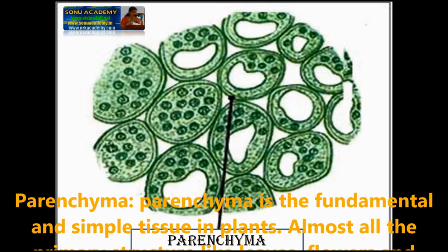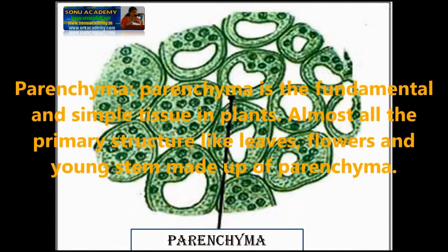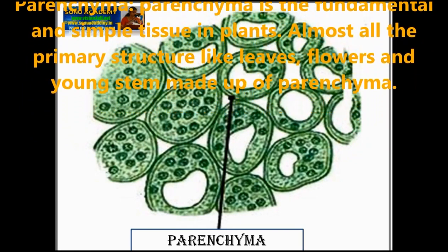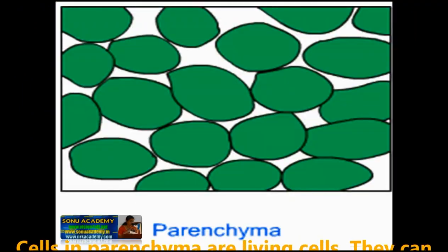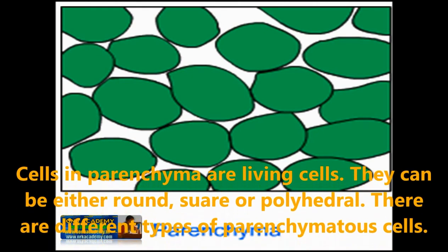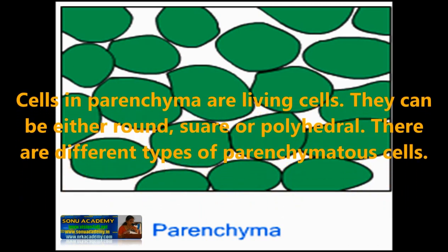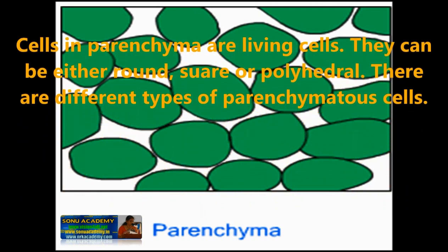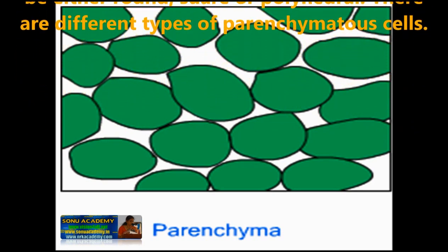Parenchyma is the fundamental and simple plant tissue. Almost all the primary structures like leaves, flowers and young stems are made up of parenchyma. Cells in parenchyma are living cells. They can be either round, square or polyhedral. There are different types of parenchyma cells: chlorenchyma, aerenchyma, storage tissue, and water storage.